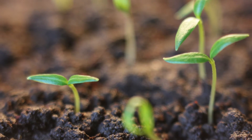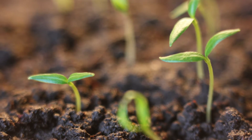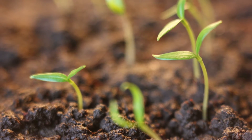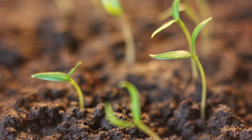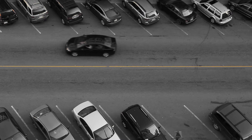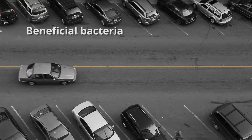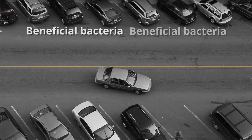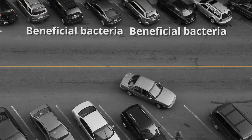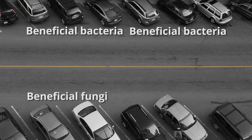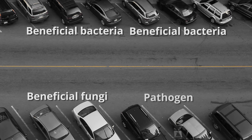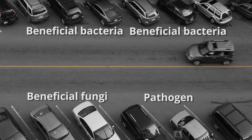We're also limiting the amount of exposure plants have to pathogens. An analogy I like to make is that in the root zone, all roots exchange nutrients with the surrounding soil. The nutrient exchange sites could be like parking places. The more parking places you can occupy with beneficial bacteria and beneficial fungi, the less opportunities pathogens have to park in those places.